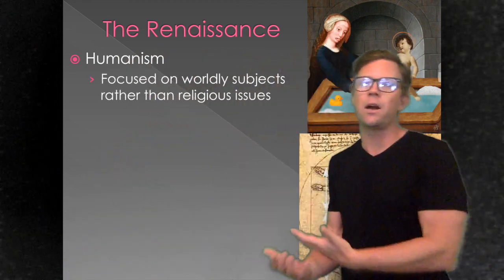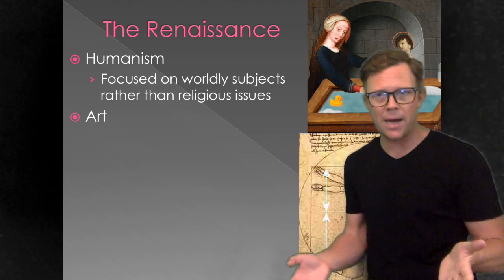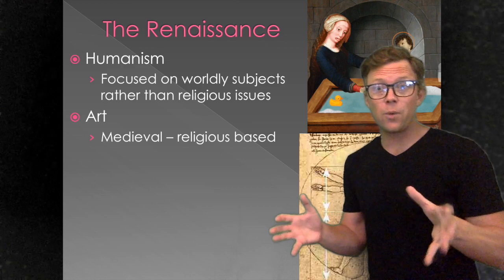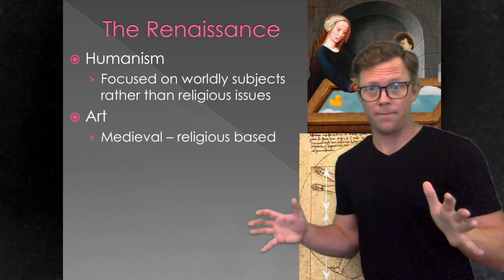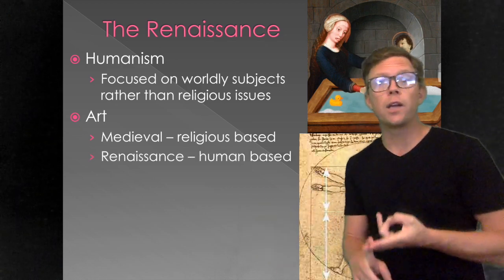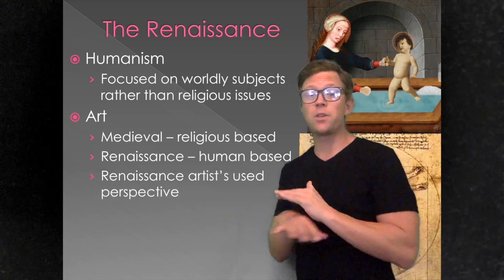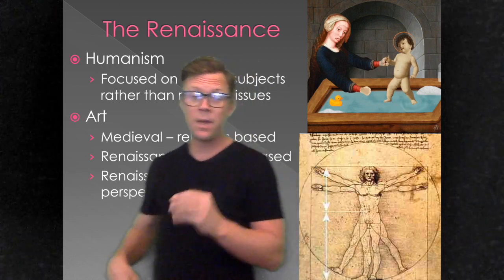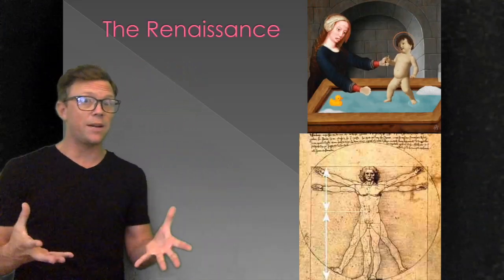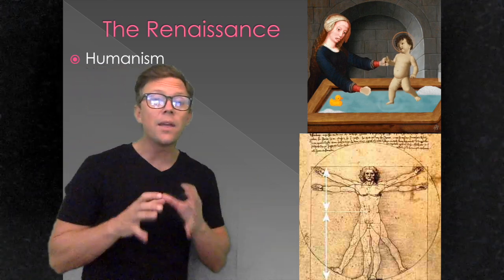Right here is the Vitruvian Man, drawn by Leonardo da Vinci. Keep in mind, doing research on anatomy was illegal back then. The concept of doing an autopsy or cutting open a cadaver to see how everything worked was 100% illegal during this time period. So da Vinci had to work out shady deals with grave robbers and grave diggers to get access to cadavers so he could study the human form.